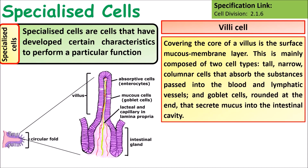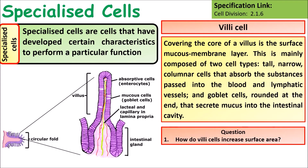In the small intestine, villi cells are ciliated cells which have lots of protrusions, thereby increasing their surface area. This increase in surface area helps increase the rate of diffusion. Think about how a villi cell increases its surface area.